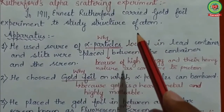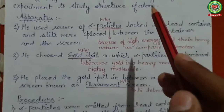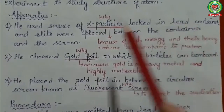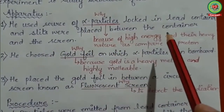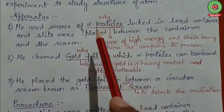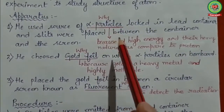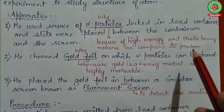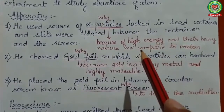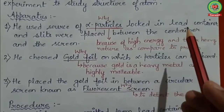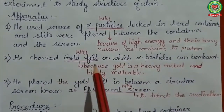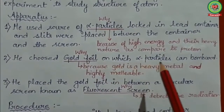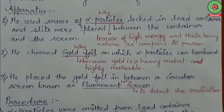In 1911, Rutherford carried out the gold foil experiment to study the structure of atoms. For this experiment he used a gold foil. He used a source of alpha particles locked in a lead container, with slits placed between the container and the screen. Alpha particles were chosen because they are very high in energy, heavy compared to protons, and also positively charged. A lead container was used because the source is radioactive.